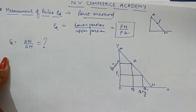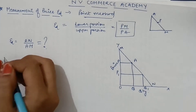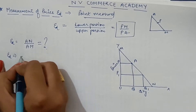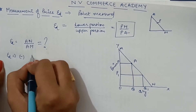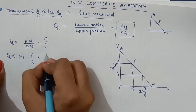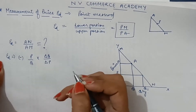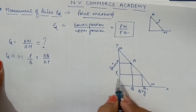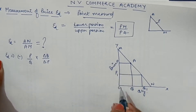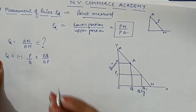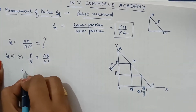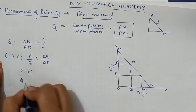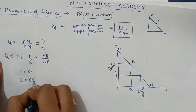But how can we derive this? For this, we will use our formula derived from the percentage method: E = (P/Q) × (ΔQ/ΔP). Here, the initial price according to the diagram is OP, and the initial quantity is OQ.